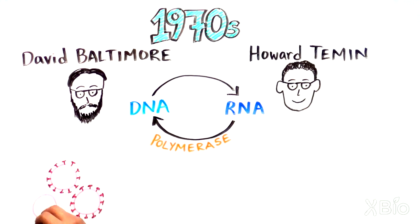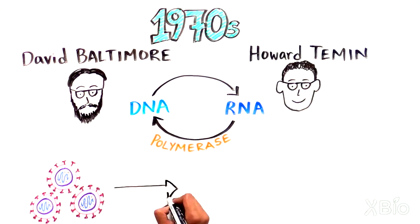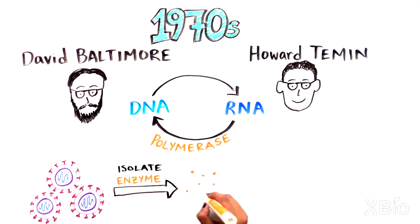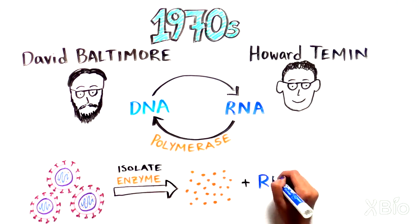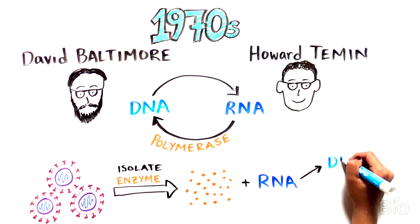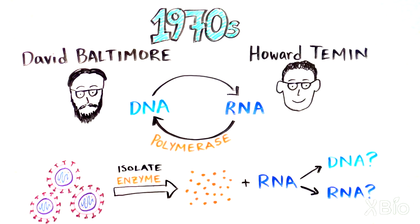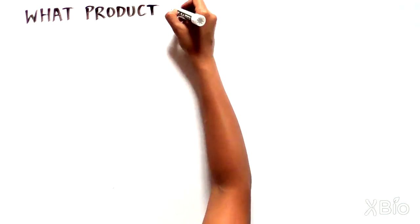So they went on a search for this enzyme. First, the scientists isolated a candidate enzyme that could use an RNA template and make a product. But what was the product? Was it copies of DNA or of RNA?